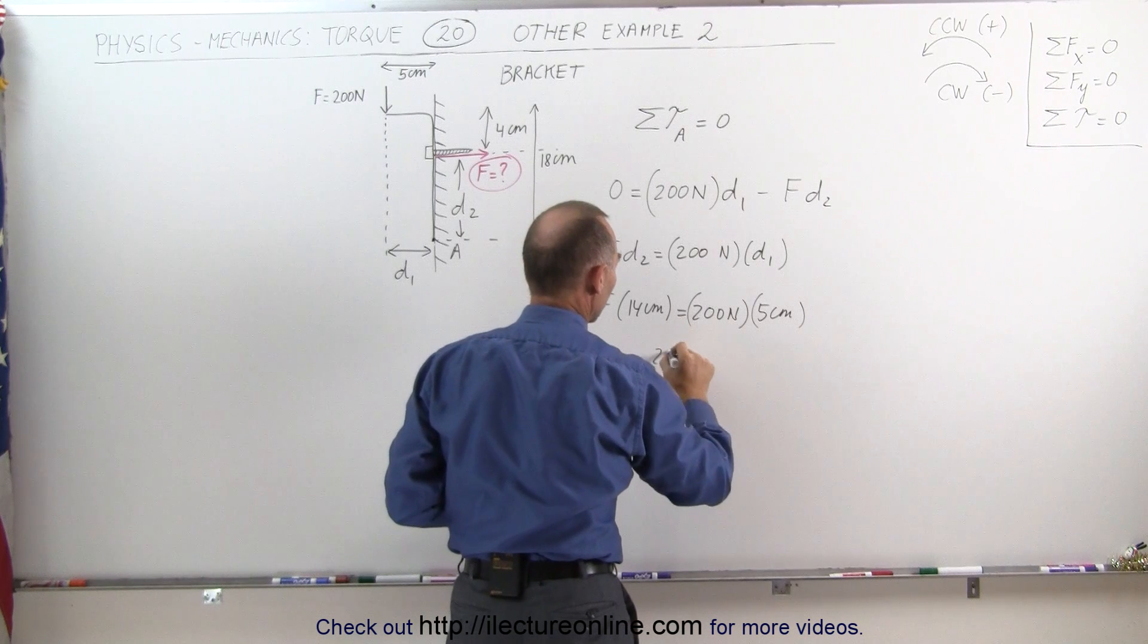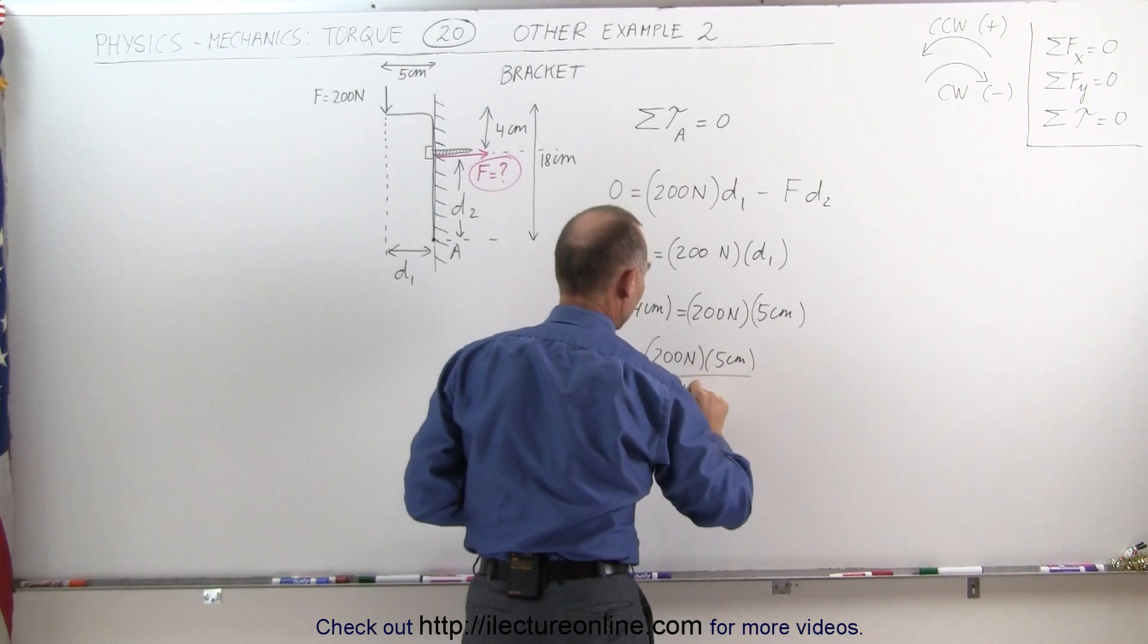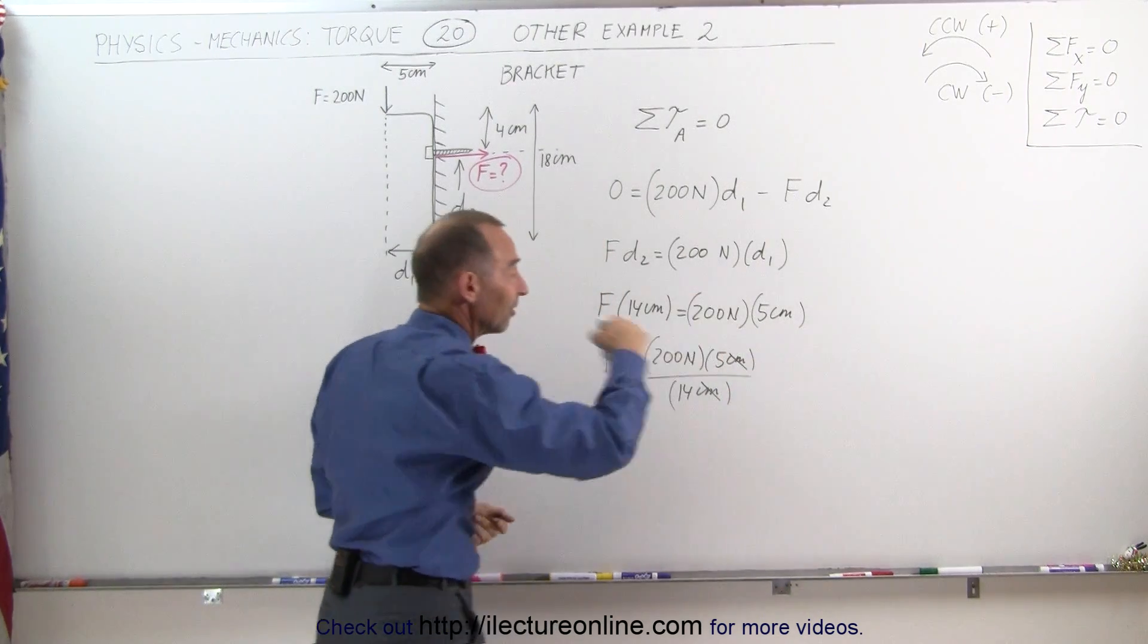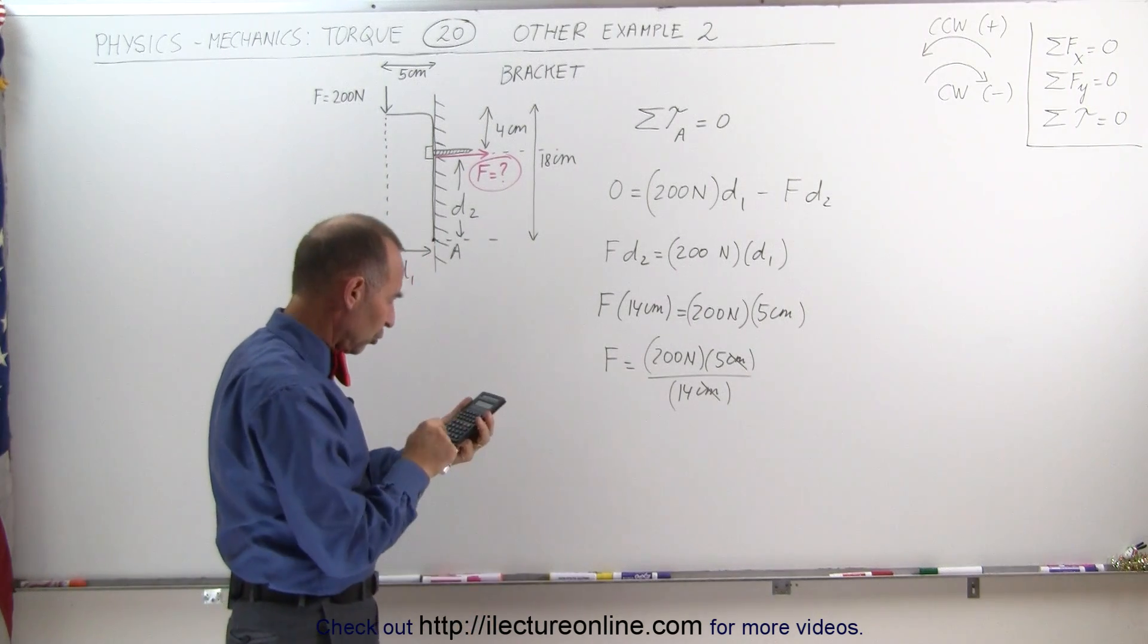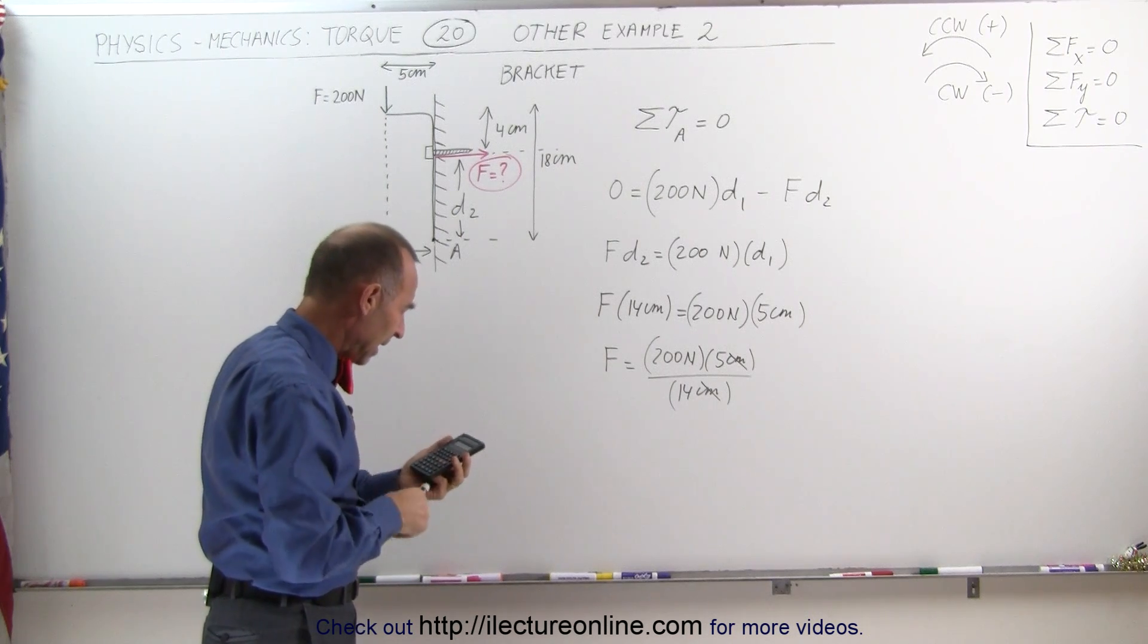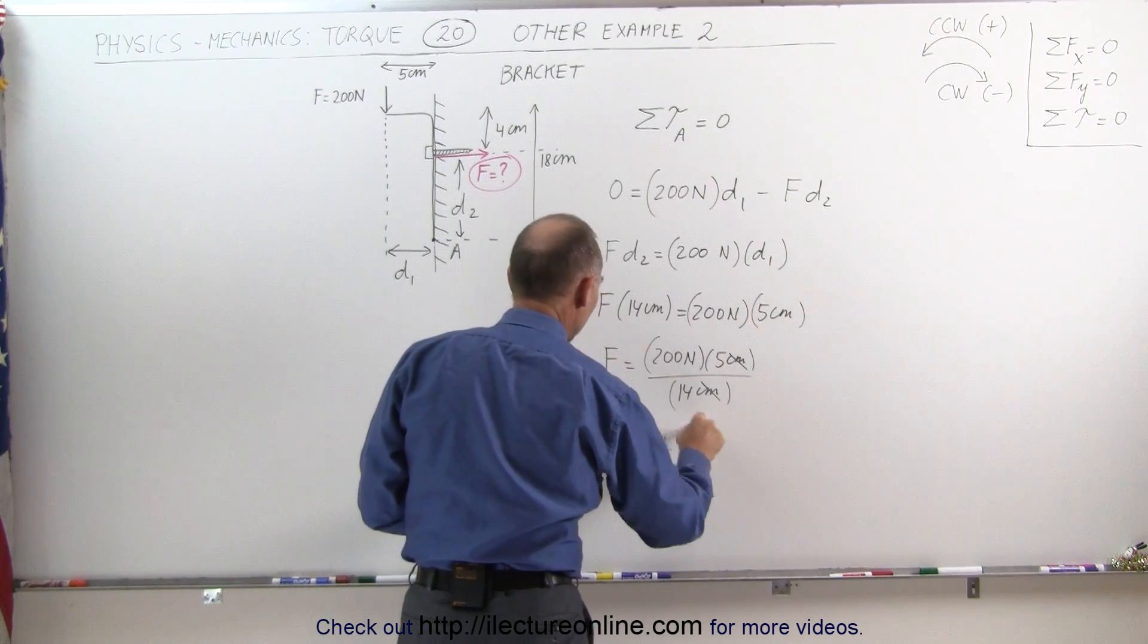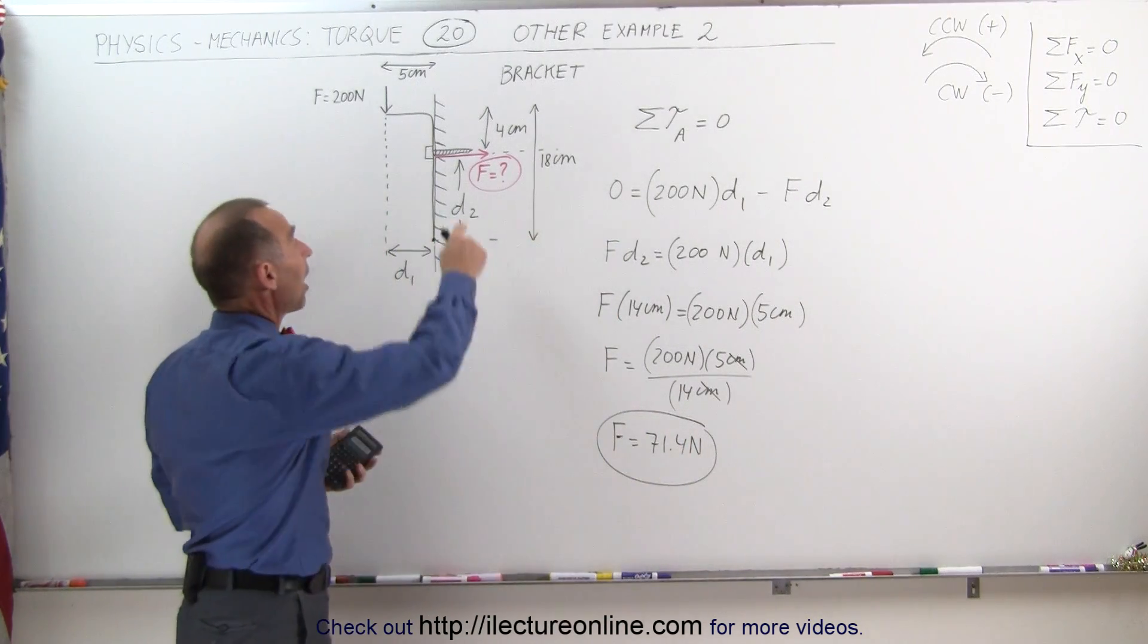F then becomes 200 newtons times 5 centimeters divided by 14 centimeters. You may wonder why is he mixing centimeters with newtons, but we don't have to worry here because the centimeters cancel out. As long as you stay consistent with the problem, that is quite all right. And now we're ready to calculate the force on the screw. 200 newtons times 5 divided by 14, and that's equal to 71.4 newtons, which is not a lot of force. That shows that brackets do not put a lot of strain or stress on the screw.